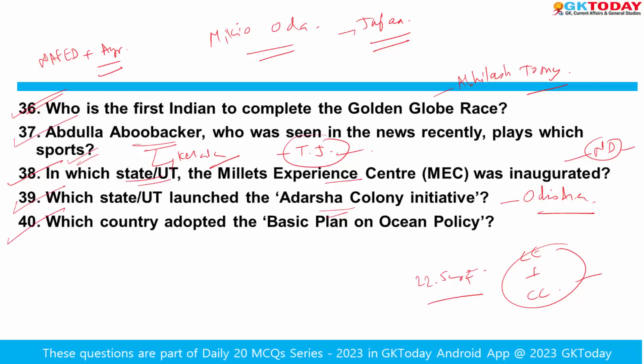Which country adopted the basic plan on ocean policy? Japan has adopted its basic plan on ocean policy, which will improve marine security because China's influence is growing in regional seas.